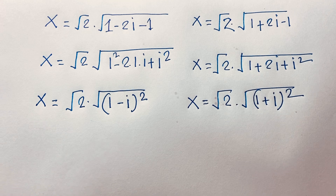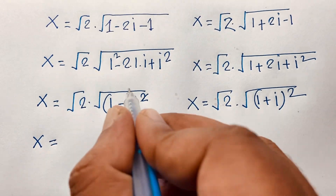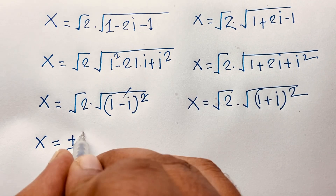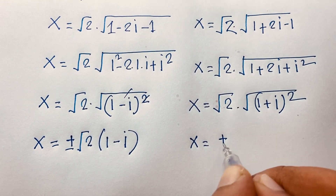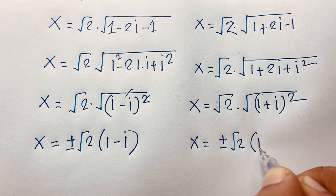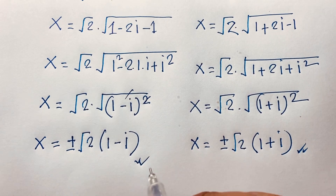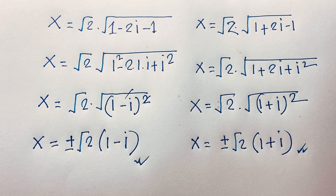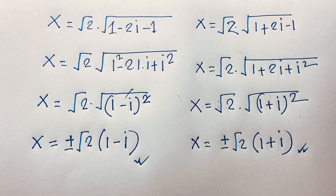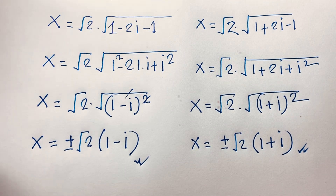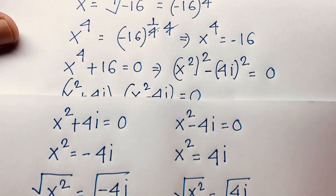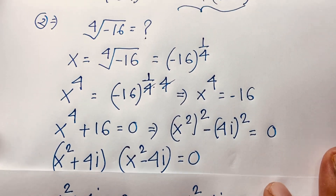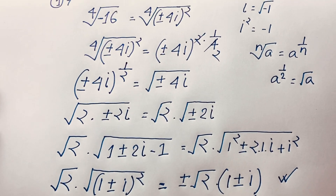Cancelling the square and square root, we find x = ±√2 · (1 - i) and x = ±√2 · (1 + i). These are our solutions — there are no real solutions; both are complex numbers. Thank you all. If you enjoyed this math olympiad complex number question, please subscribe to my channel for more interesting videos. Goodbye, take care.